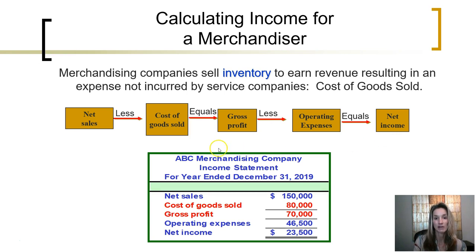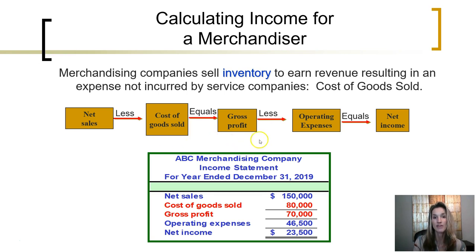In summary, income of a merchandising company is their revenues less that one expense, the cost of the goods sold, calculating gross profit. We then subtract all of the other operating expenses — selling and administrative and general expenses — to get our calculation of net income.